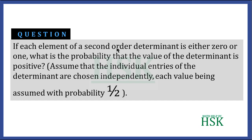We have a determinant of second order, meaning it has 2 rows and 2 columns. Each element is either 0 or 1. We assume that the individual entries of the determinant are chosen independently, each being assumed with a probability of 1/2.